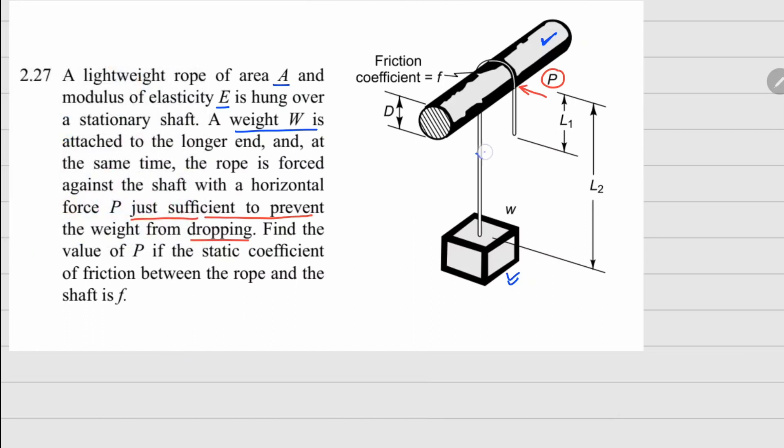If you notice this side and draw the free body diagram, this tension T₁ is going to equal W.